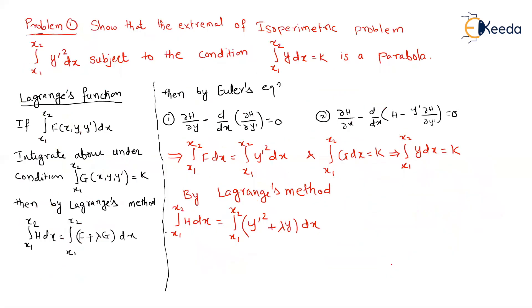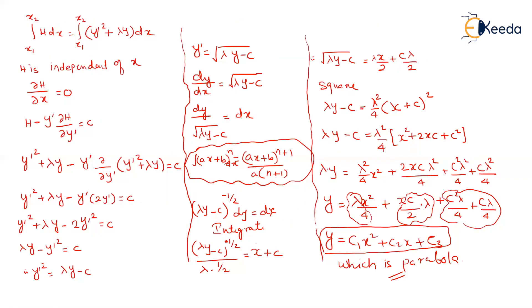The problem asked us to show that the extremal of the isoperimetric problem subject to the given condition is a parabola, and we have proved it. Lagrange's function or isoperimetric problems — nothing new, just 2 to 3 additional steps, after which the problem converts into one of the previous types. Be careful while solving, practice well. Hope you understood. Thank you.